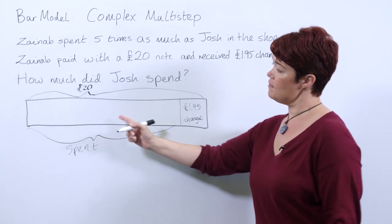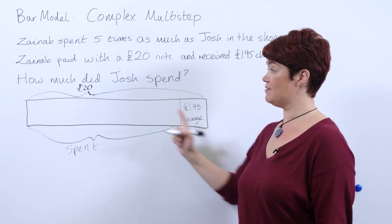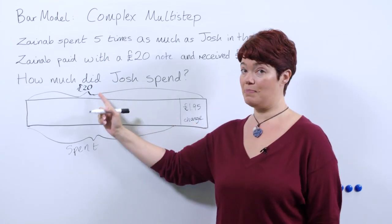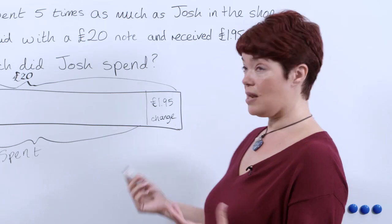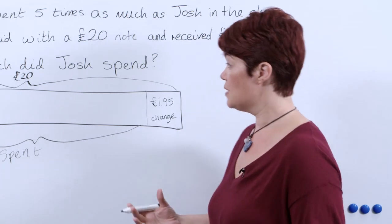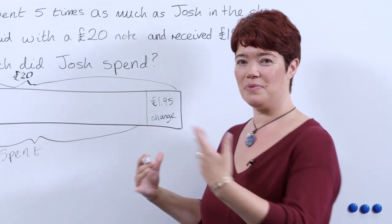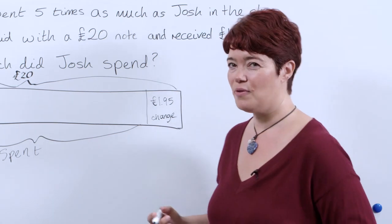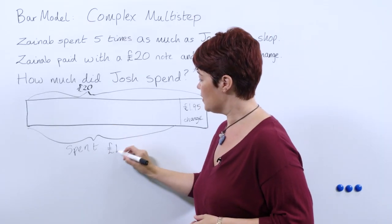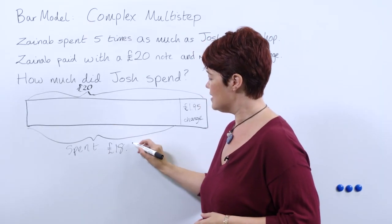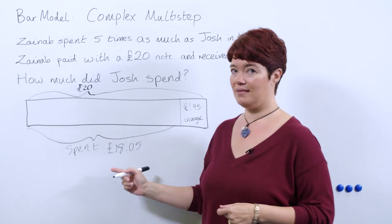Now they can hopefully see that we need to subtract the £1.95 from the £20 to find out how much that was. We can either use a formal written method, or a good way is to take away £2 and add £0.05 back on, enhancing those mental skills. So hopefully the pupils work out that £18.05 was spent.